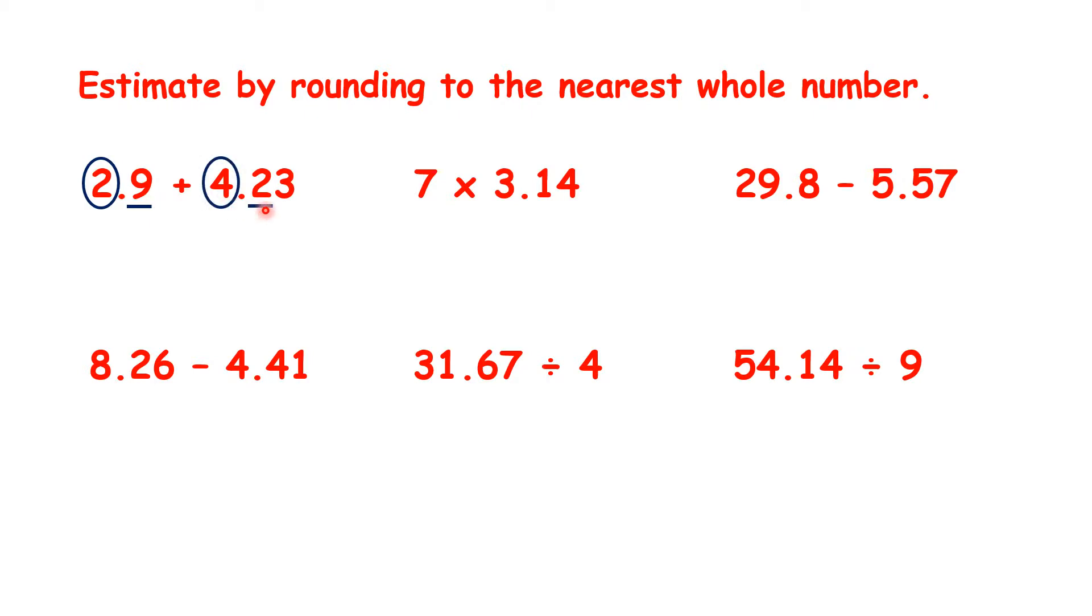And here, with 4.23, because the tenths digit is less than 5, we round down to 4. So 2.9 plus 4.23 should give an answer which is close to 7, because when we round our decimals to the nearest whole number, we get 3 plus 4.